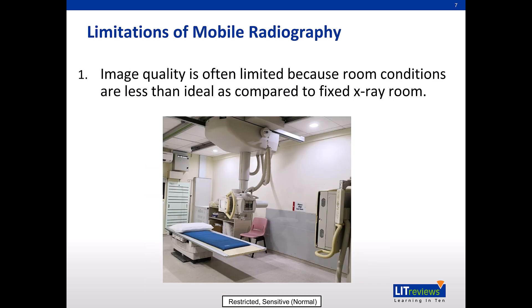There are three limitations of mobile radiography services. Firstly, image quality is often limited because room conditions are less than ideal as compared to a fixed x-ray. Only chest x-rays and supine abdomen x-rays are commonly performed on acutely ill patients who may have urgent findings necessitating prompt detection and treatment. The rest of the x-rays are not recommended, and patients are advised to be brought to the radiography department.